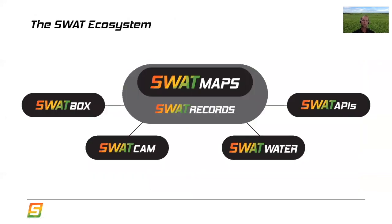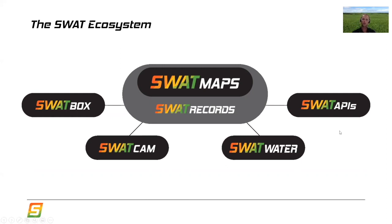Everything is ultimately driven through what we call the SWAT ecosystem. The SWAT box is our proprietary device for EC mapping that flows through SWAT records through the cloud automatically to make SWAT maps, and then everything else is driven from there. We've also got a couple of new products called SWAT cam and SWAT water. SWAT water is commercial, with the ability to install soil moisture probes in the field and create spatial water maps based on soil properties. We can also connect to John Deere Operations Center and Climate Field View for sharing of spatial data through those systems.